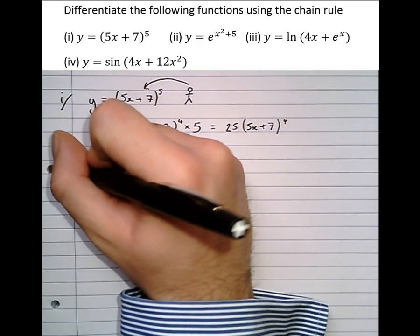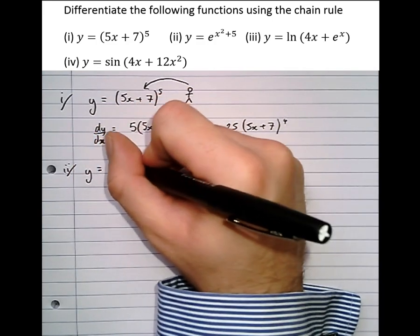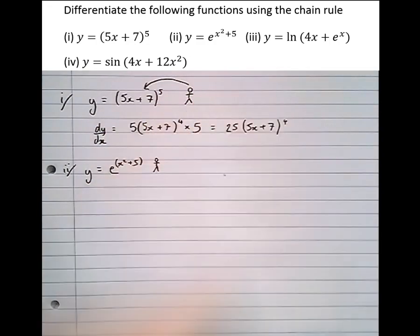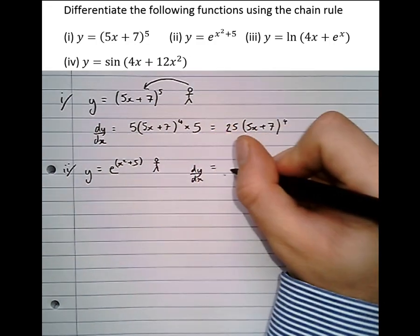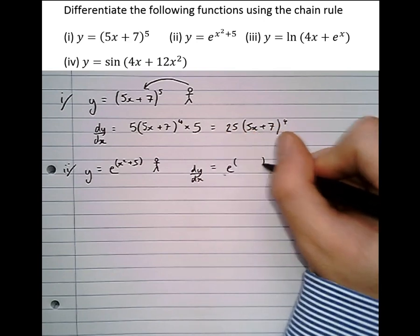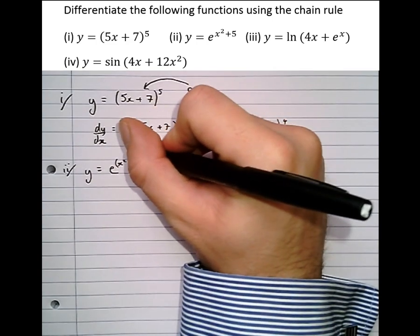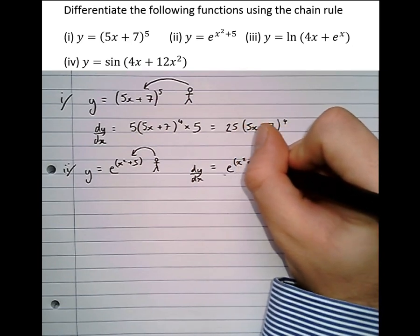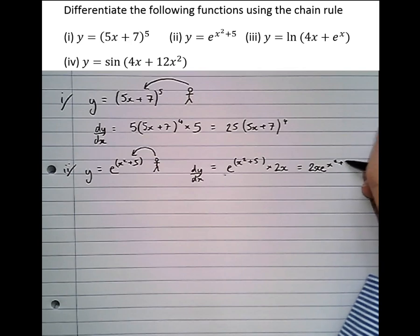So dy/dx becomes 5 lots of (5x+7) to the power of 4, times the differential of the bracket, giving 25(5x+7)^4. Now for part 2: y equals e to the power of x squared plus 5. We write the bracket around the power. The person outside sees e to the power of something — and e to the something differentiates to e to the something. Then, dissatisfied, we multiply by the differential inside the bracket, giving 2x·e to the x squared plus 5.